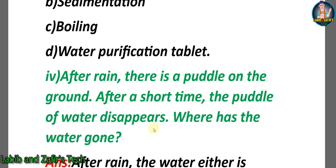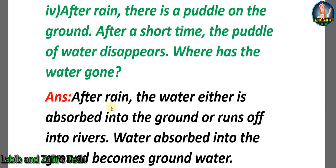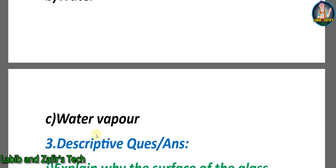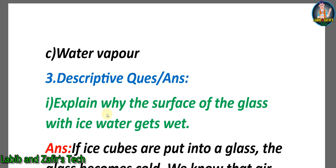Fourth question: After rain there is a puddle on the ground. After a short time the puddle of water disappears — where has the water gone? Answer: After rain, the water either is absorbed into the ground or runs off into rivers. Water absorbed into the ground becomes groundwater. Fifth question: What are the three states of water? Answer: Ice, water, and water vapor.